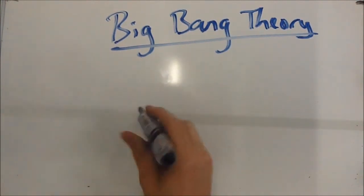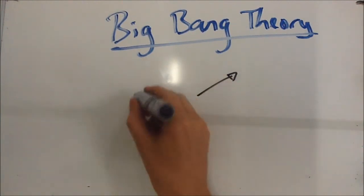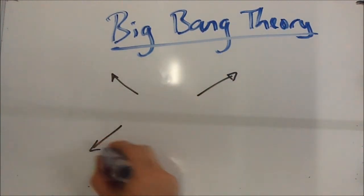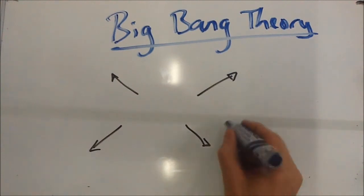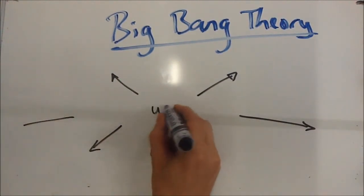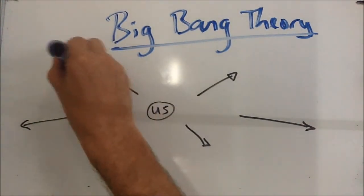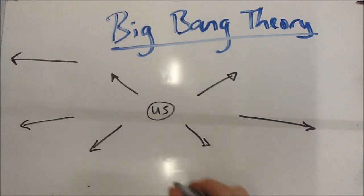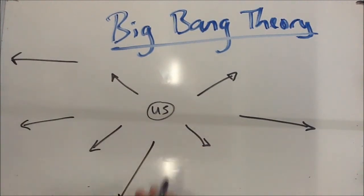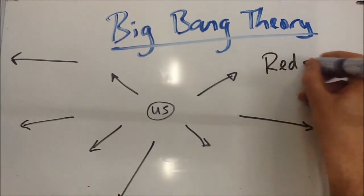Now, what we notice is this. If we look into the sky, we notice that all the galaxies we can see seem to be moving away from us. And the further away they are — this is us here in the middle — the faster they appear to be moving. Now, I'm not saying we're at the centre of the universe; we're certainly not. But they all seem to be moving away from us, and we know that because of redshift. So there are two bits of evidence for it. Redshift is the first.